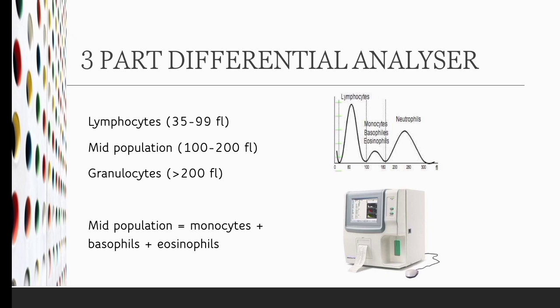3 part differentiation is mainly based on the cell size detection. This allows the cell to be divided into three distinct classifications of size. First is lymphocyte, the type of WBC with the size range of 35 femtoliter to 99 femtoliter. Second is mid population, which includes WBC with size range of 100 femtoliter to 200 femtoliter. Third is granulocytes, which includes WBC with the size more than 200 femtoliter. This cell counter does not divide neutrophils, eosinophils, and basophils separately. The mid population contains all the cells including monocytes, basophils, and eosinophils.